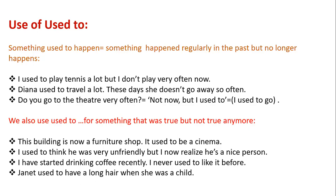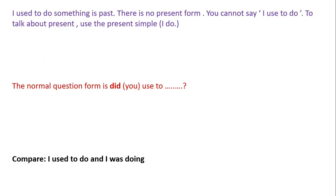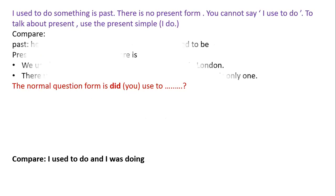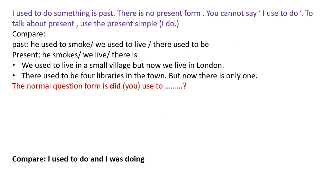'I used to do something' is always past — there is no present form. You cannot say 'I use to do' to talk about the present; we must use the present simple. Let's compare: in the past, 'he used to smoke'; in the present, 'he smokes'. 'We used to live in a small village, but now we live in London.' 'There used to be four libraries in the town, but now there is only one.' The normal question form is: did + subject + use to. For example: 'Did you use to eat a lot of sweets when you were a child?'